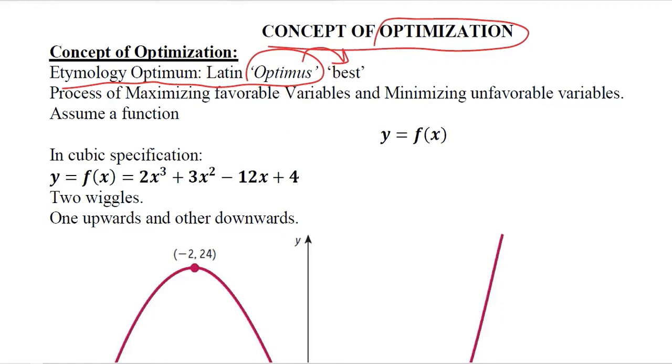Now the best outcome is not necessarily the most desirable thing; it can be the least of the undesirable thing. For example, the process of maximizing the favorable variables and minimizing the unfavorable variables. We know that we have utility, we have revenue, we have profit, and in the unfavorable variables we have costs and we have loss.